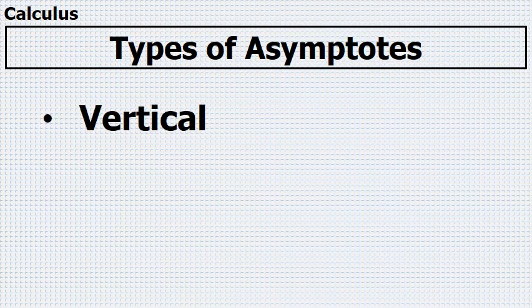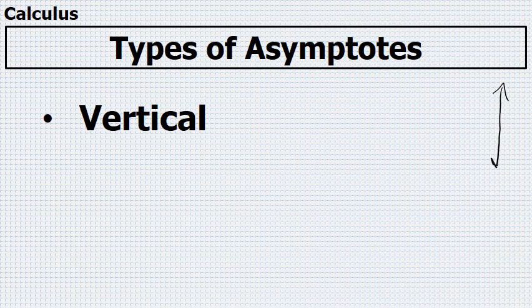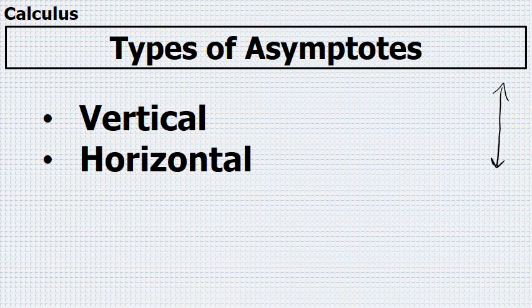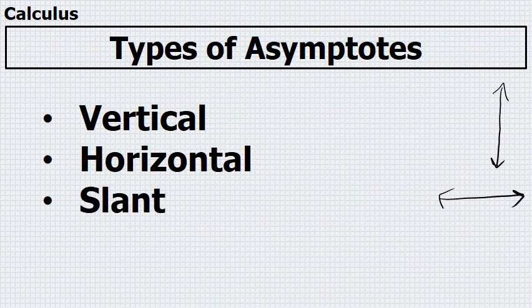When sketching curves, an asymptote is a line that is not part of the graph, but it is a line that the graph will approach and get closer and closer to, but never touch. There are three kinds of asymptotes: first is a vertical asymptote, the second kind is horizontal, and the third kind is a slant asymptote.